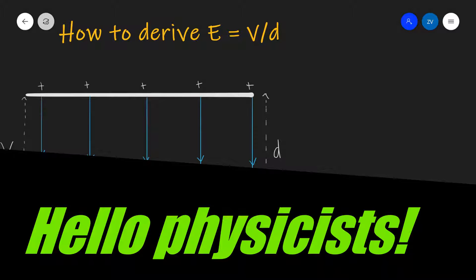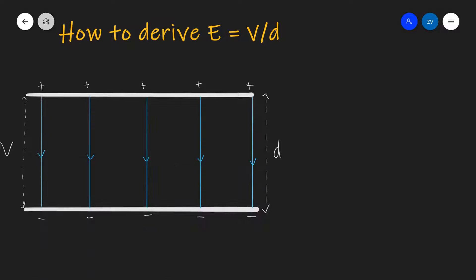Hello physicists, welcome back to Z-Physics. Today we are going to be deriving the famous expression for a uniform electric field E is equal to V over D.